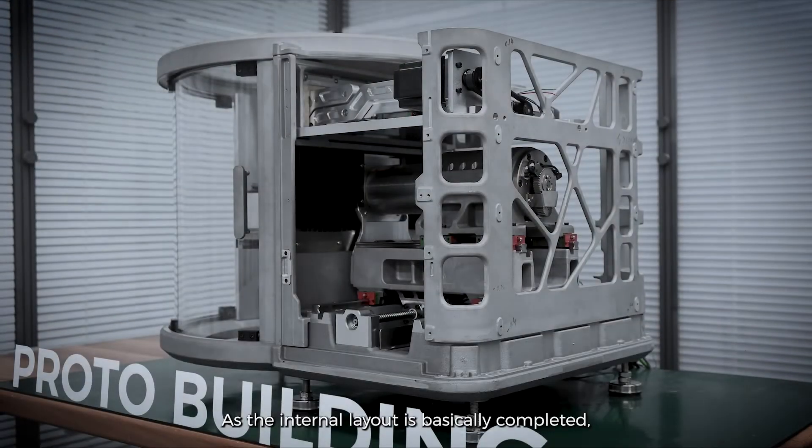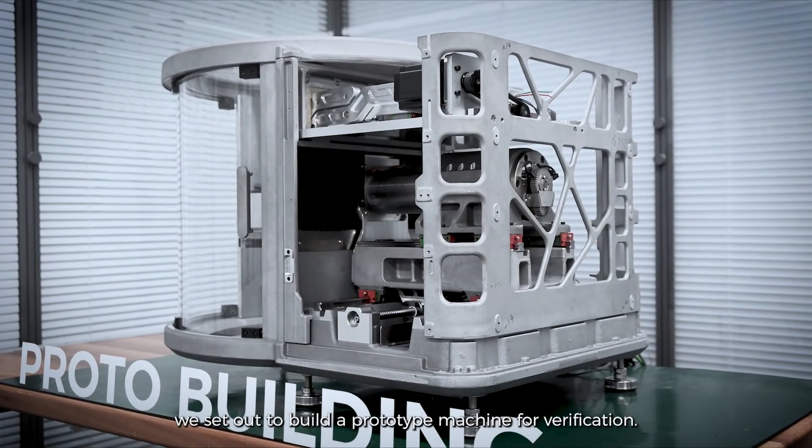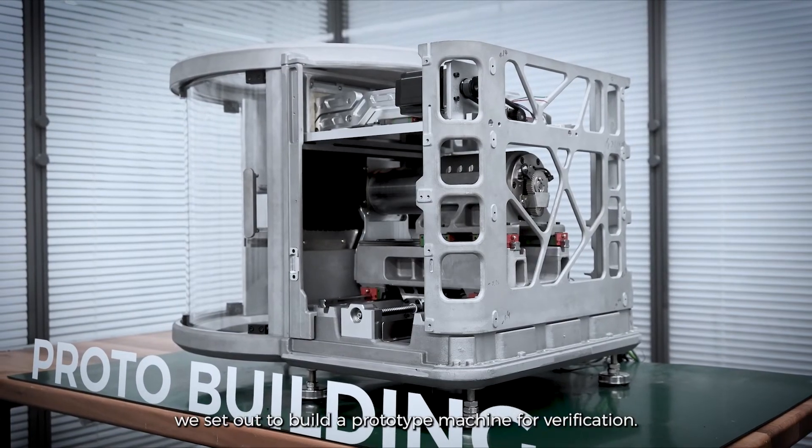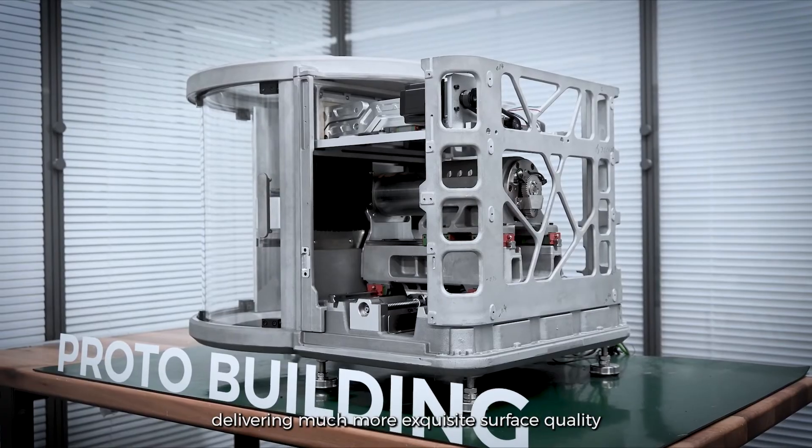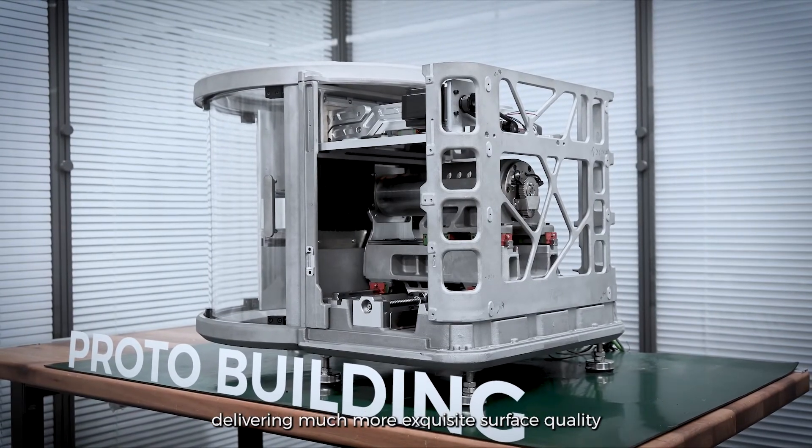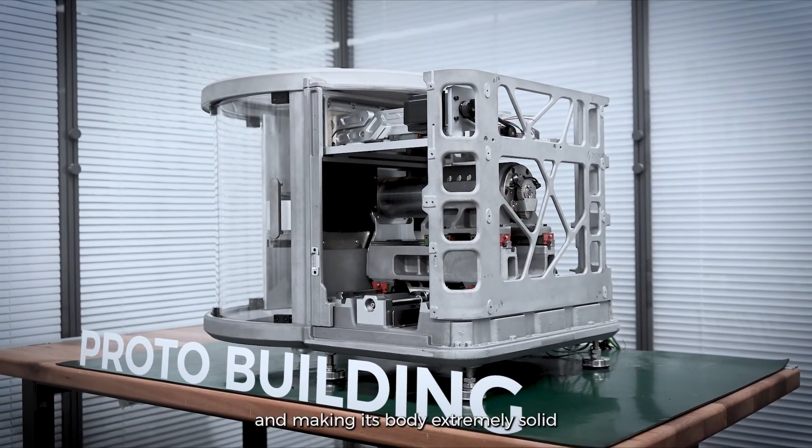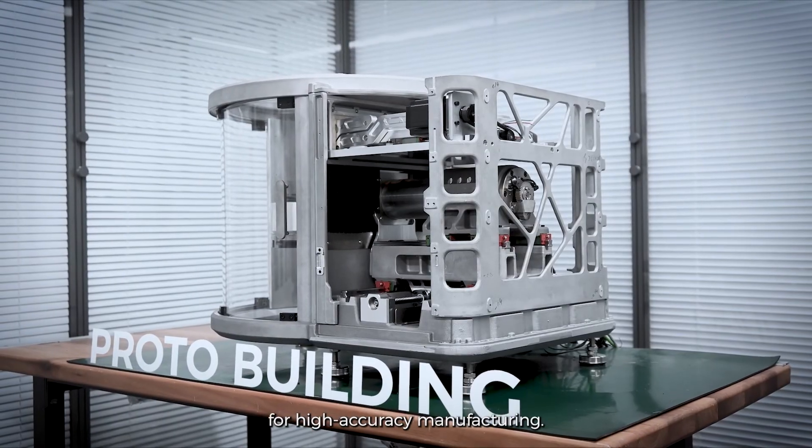As the internal layout is basically completed, we set out to build a prototype machine for verification. The prototype machine is built via a metal casting process, delivering much more exquisite surface quality and making its body extremely solid for high accuracy manufacturing.